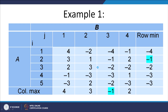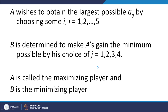In the last column, the row minimum corresponding to each row is indicated. At the last row, the column maximum — the maximum entry in each column — is shown. A wishes to obtain the largest possible A_ij by choosing i from 1 to 5, while B is determined to make A's gain the minimum possible by choosing j from 1 to 4. Hence A is called the maximizing player and B the minimizing player.